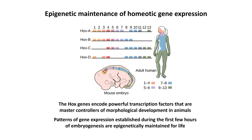Here are four Hox clusters — A, B, C, and D — with multiple genes present in each, expressed in different places within the developing embryo. You can see this all the way through to somatic tissues in an adult.